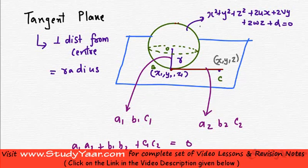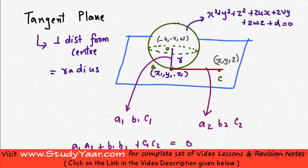Now I know that if this is the equation of my sphere, then its center is at minus u, minus v, minus w. And if you know the two end points of a line, you essentially know the direction ratios.